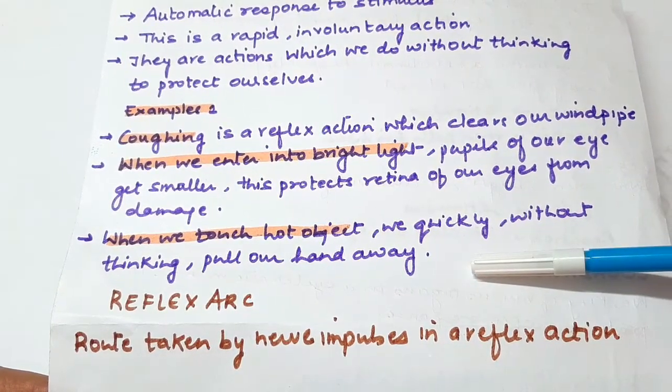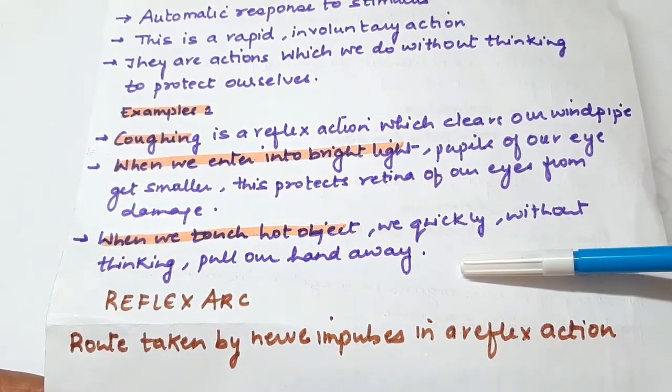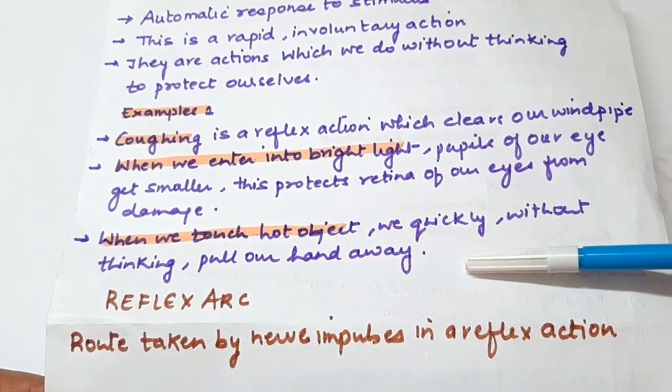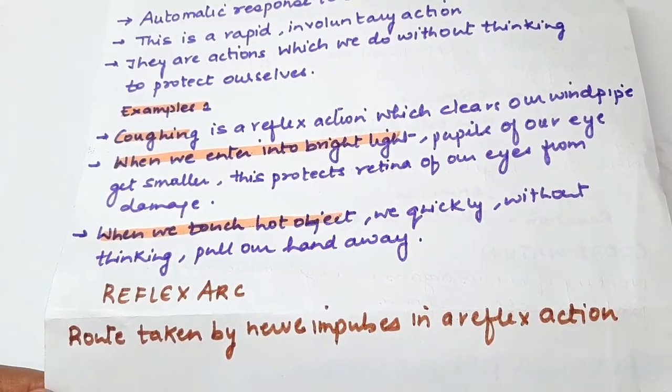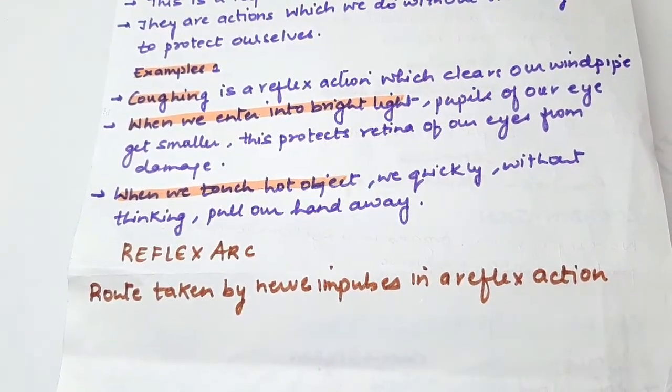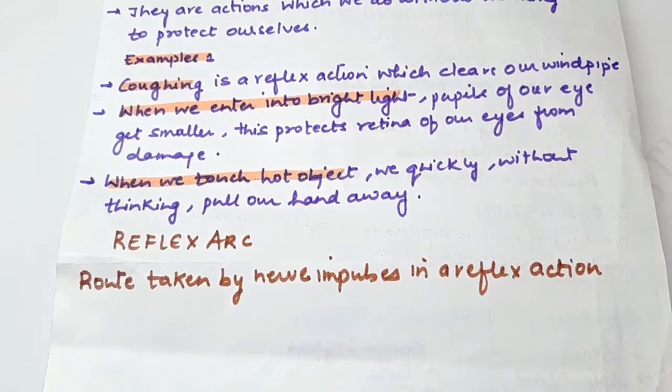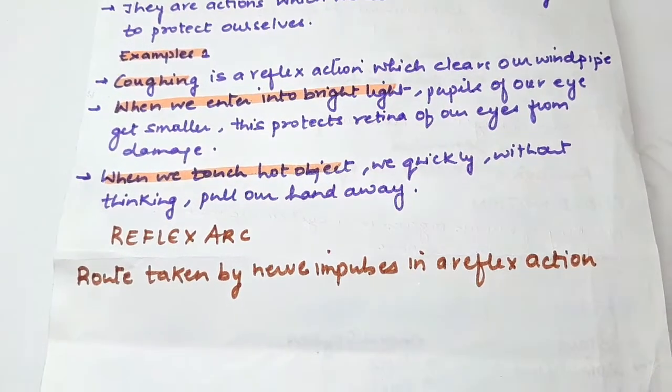Similarly, when we touch a hot object, we quickly pull our hand away without thinking. So this is also a form of reflex action. Now let's move on to reflex arc. Reflex arc is a route where our nerve impulses travel to complete the reflex action. Now we will see some examples which will make reflex arc clear.